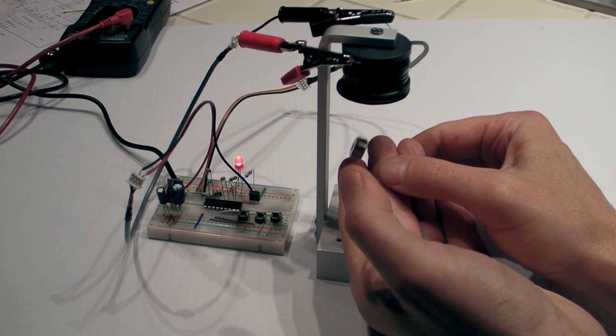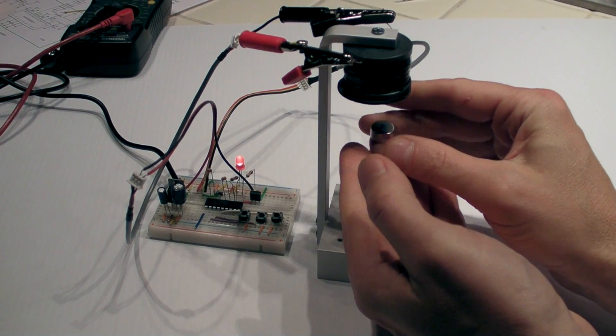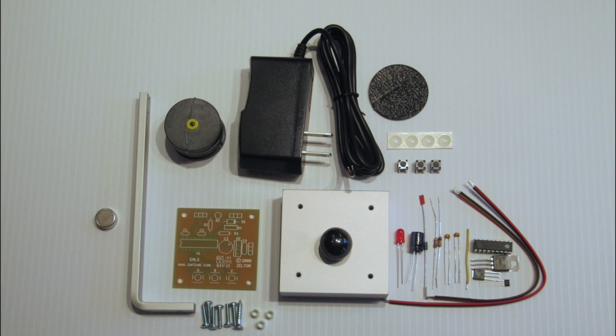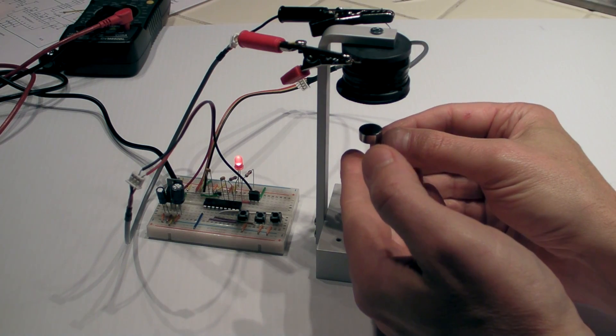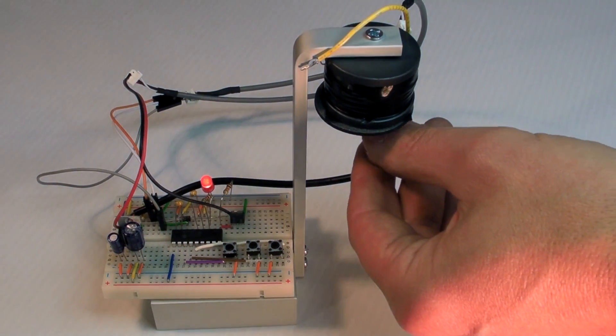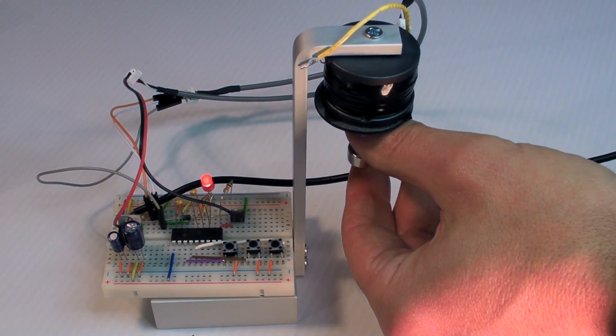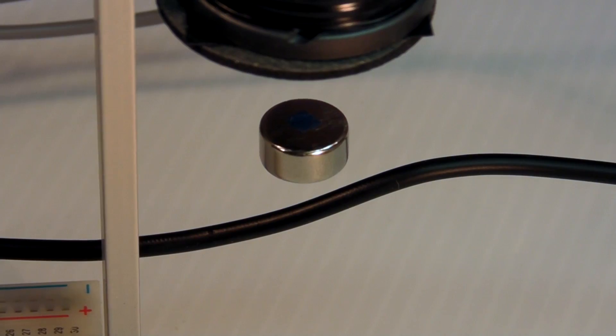After trying out several variations of this circuit and finding none that really worked very well, I obtained a kit from Zeltom that is supposed to be able to suspend about 25 grams of weight underneath a single Hall sensor-equipped coil.